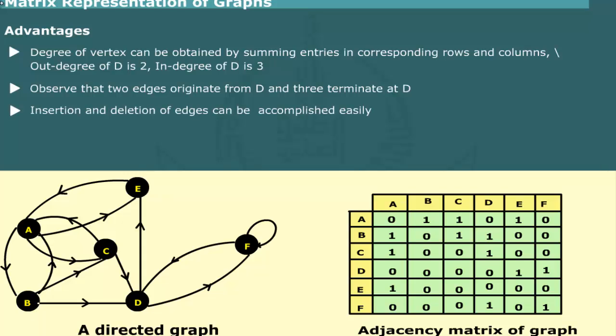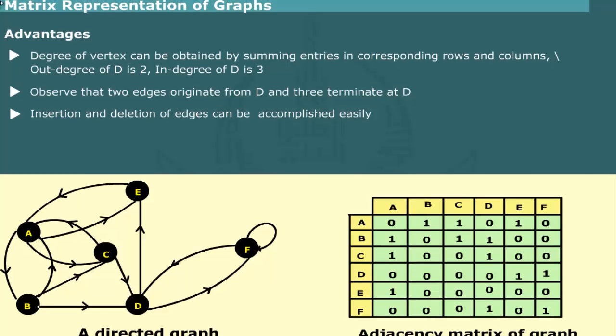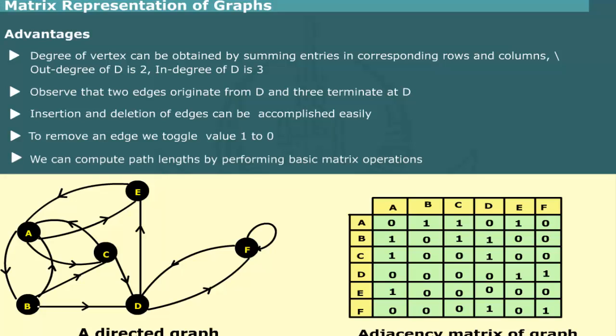Another advantage of the adjacency matrix is that insertion and deletion of edges can be accomplished easily. In order to remove an edge, we simply toggle the value 1 to 0 in the corresponding row and column. The biggest advantage of matrix representation is that we can compute path length by performing basic matrix operations. We shall look at this aspect later.